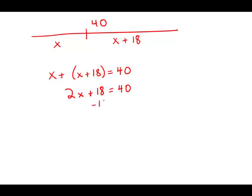I'll subtract 18 from both sides. 2x equals 22. Now I will divide both sides by 2 and I get x equals 11. And this is answer choice B.